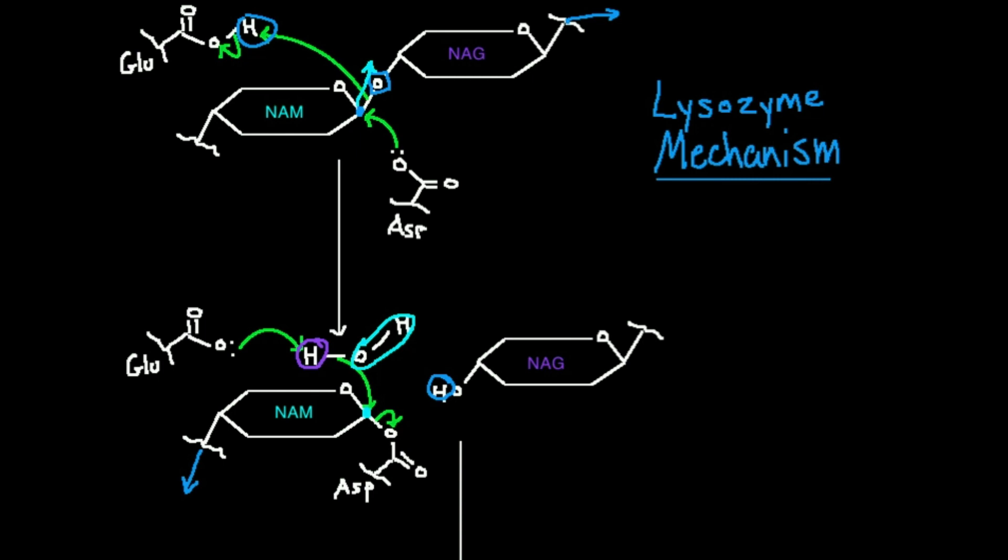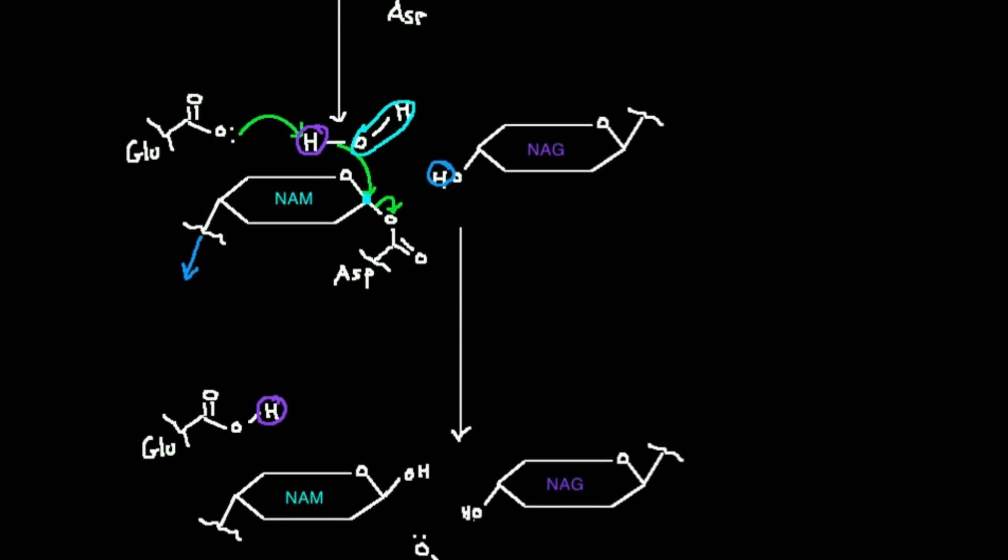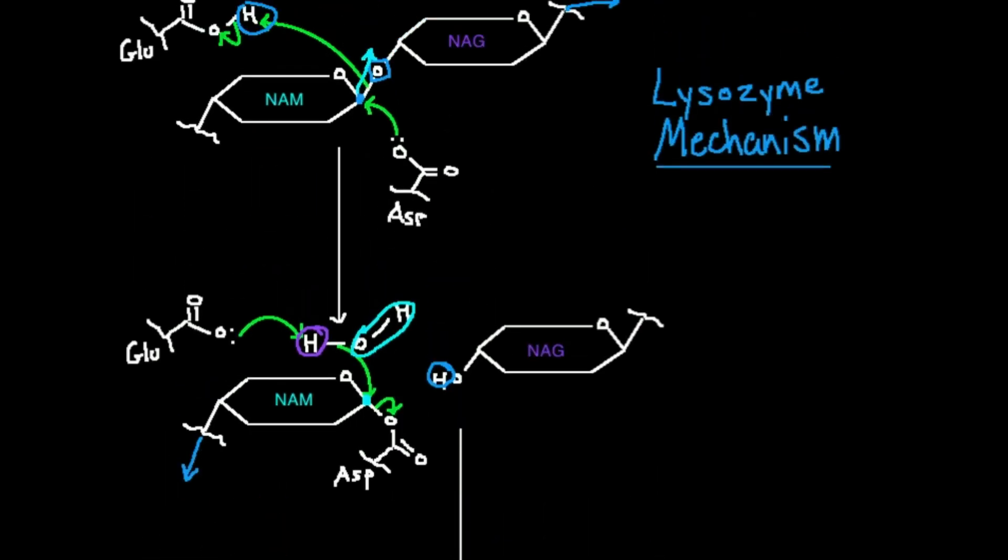That backside attack is the same thing here. When this hydroxide attacks from the top, this aspartate is covalently attached from the bottom. The hydroxide could not attack from this side. So the hydroxide has to attack from the top and causes this bottom leaving group aspartate to leave. It all has to do with the fact that this NAG attaches on the upward side of the NAM ring.